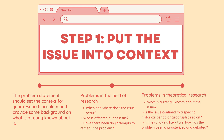For practical research, problems focus on the specifics of the situation: when and where does the issue occur? Who is affected by the issue? Have there been any attempts to remedy the problem? For theoretical research, problems consider the scientific, social, geographical, and/or historical context: what is currently known about the issue? Is the issue confined to a specific historical period or geographic region? In the scholarly literature, how has the problem been characterized and debated?